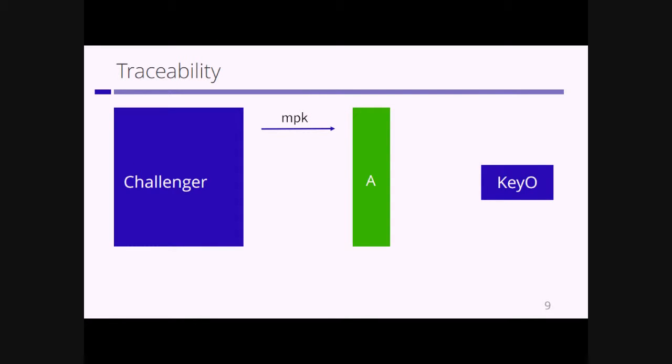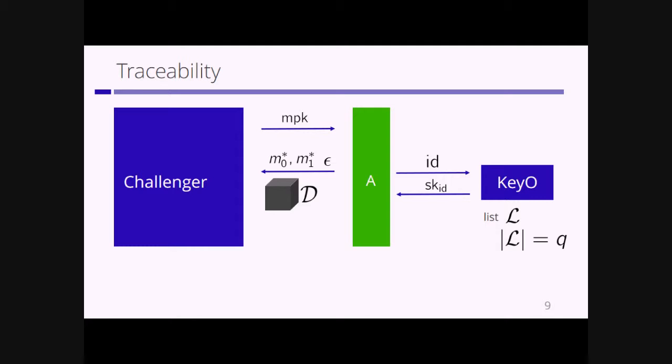Let's move to our security definition of traitor tracing. Focusing on traceability first: the challenger sends a public key to the adversary, and the adversary has access to a key generation oracle which takes an identity as input and outputs the secret key for that identity. This oracle maintains a list L of corrupted user identities; at some point the adversary outputs two plaintexts and a pirate decoder D, along with the success probability of decryption. The challenger then runs a trace algorithm with black-box access to pirate decoder D and finally outputs a list T.